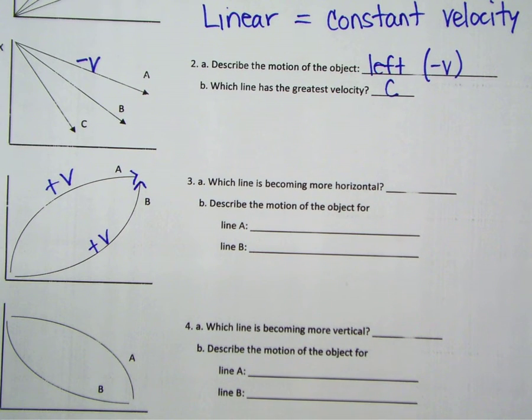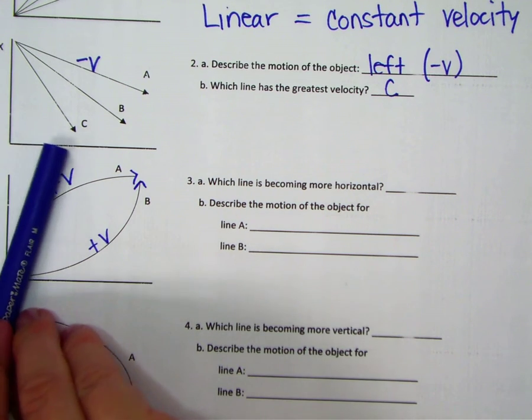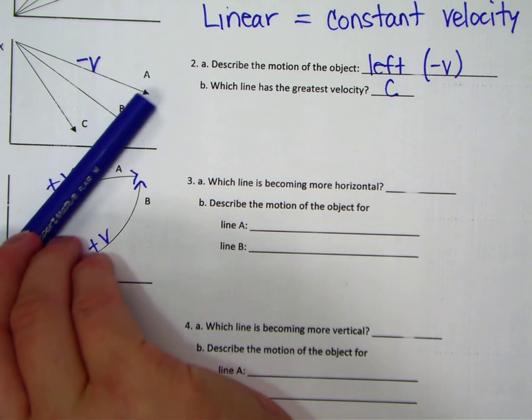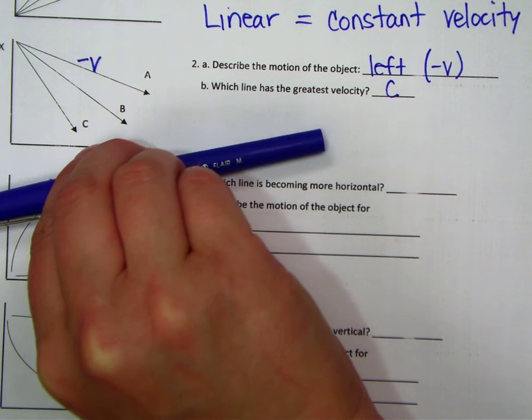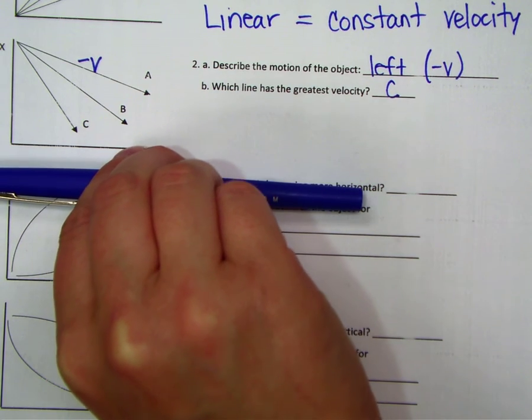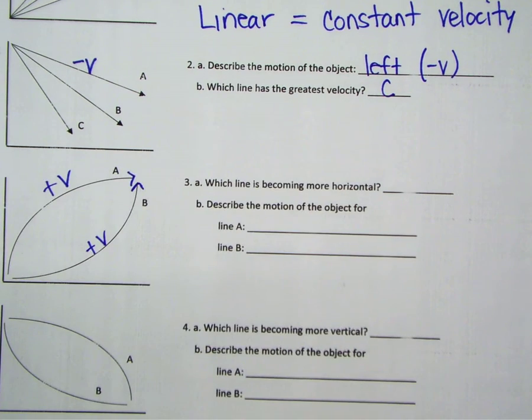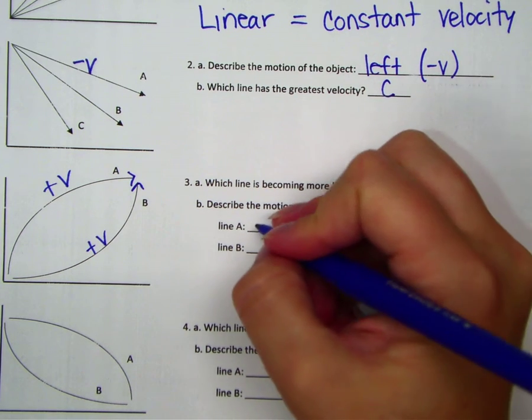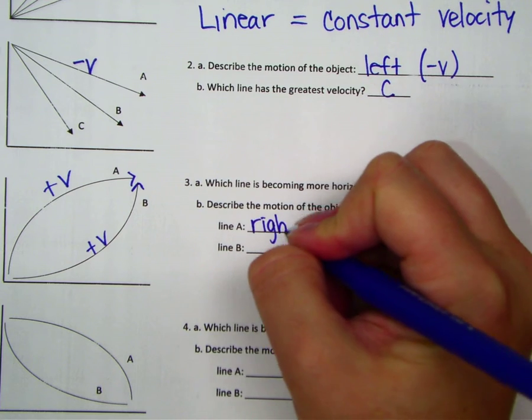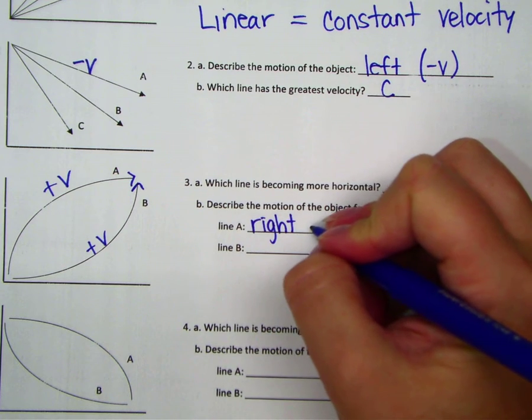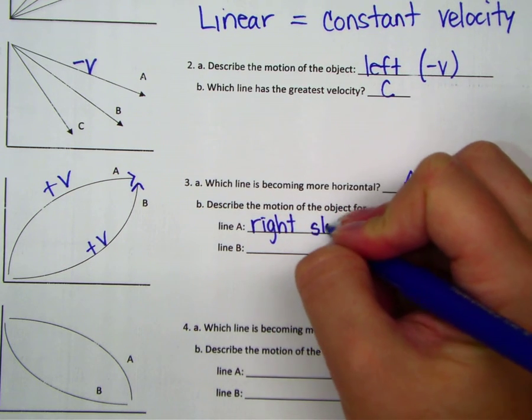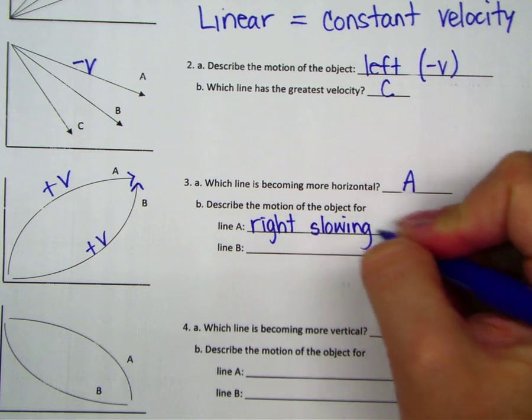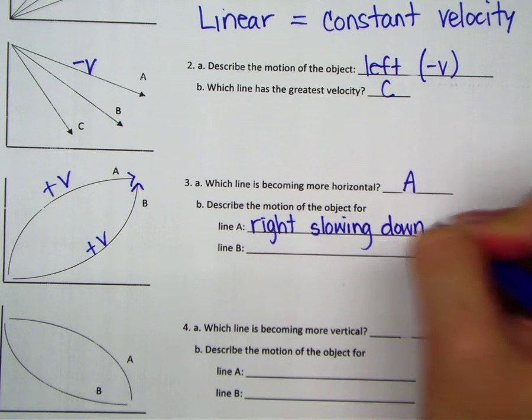So which line is becoming more horizontal? Well, if you take your pen and you trace the line as you go forward or upward, line A becomes more horizontal. So that means the object is moving to the right and slowing down.